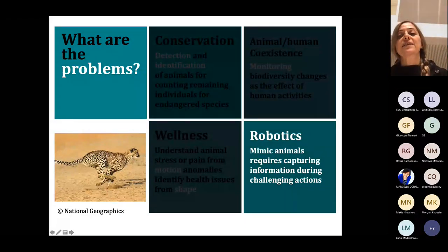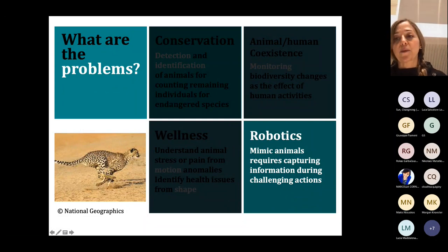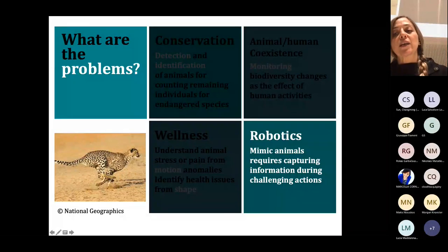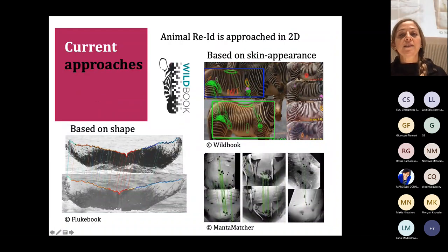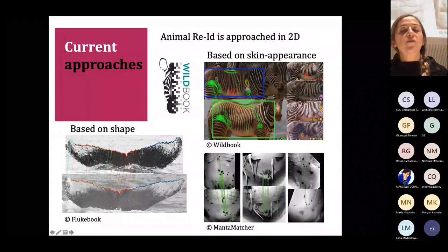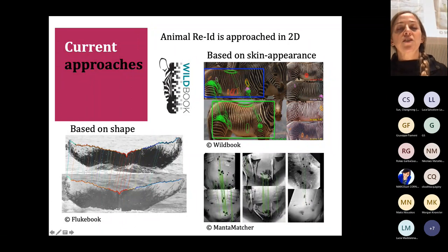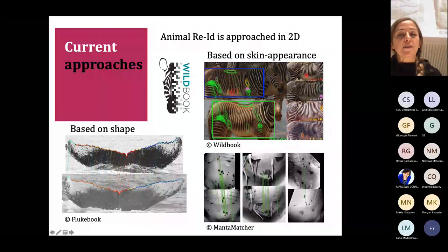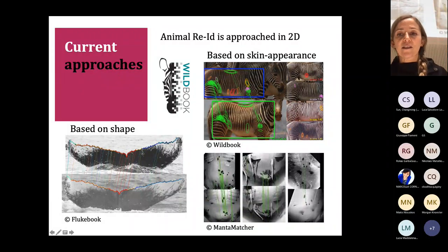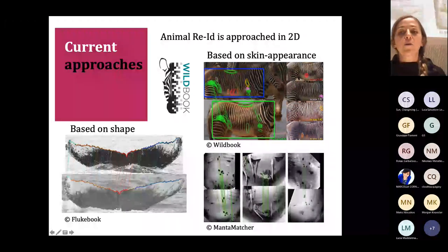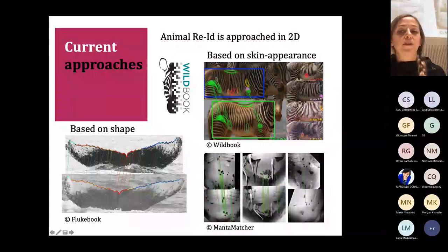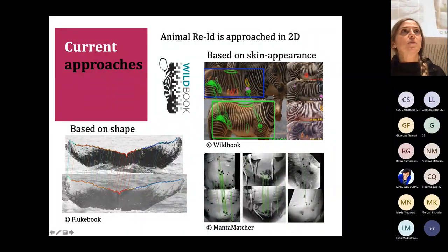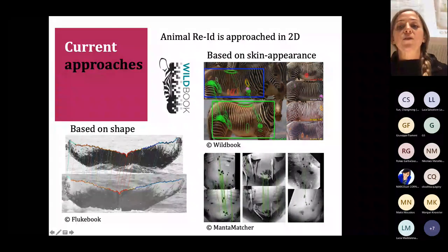In robotics, there is interest in understanding animal locomotion to mimic these highly efficient machines and design future robots. What people do today for animal identification and counting is mostly 2D. For example, Wild Me is a platform supporting species-specific systems for species like mantas, Grevy's zebras, whales, and dolphins. For textured species, systems can match images from similar viewpoints using 2D image features or body contours.